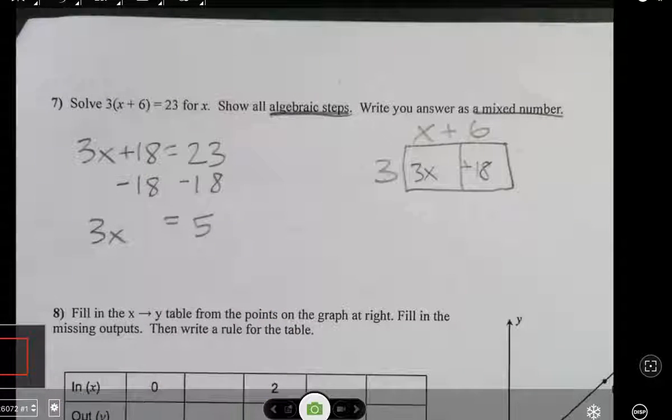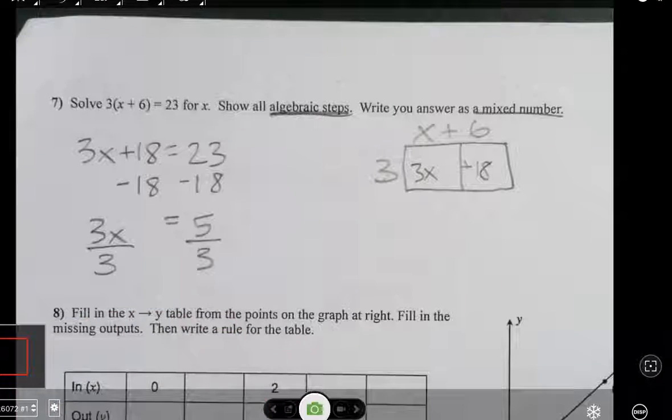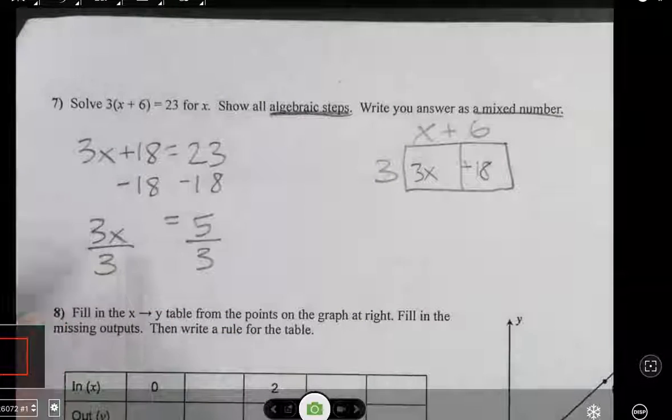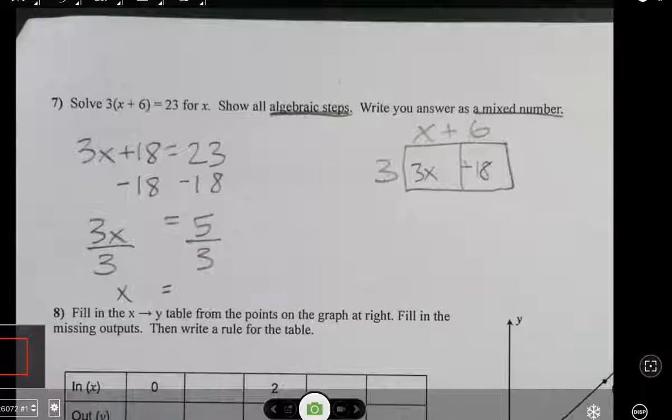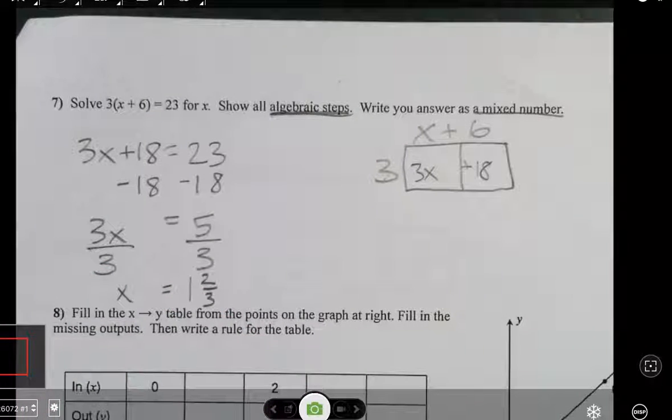Okay, now we need to divide these into 3 equal piles, 3 equal parts. 3 divided by 3 is just x. 5 divided by 3 is 1 and 2 thirds. That's it.